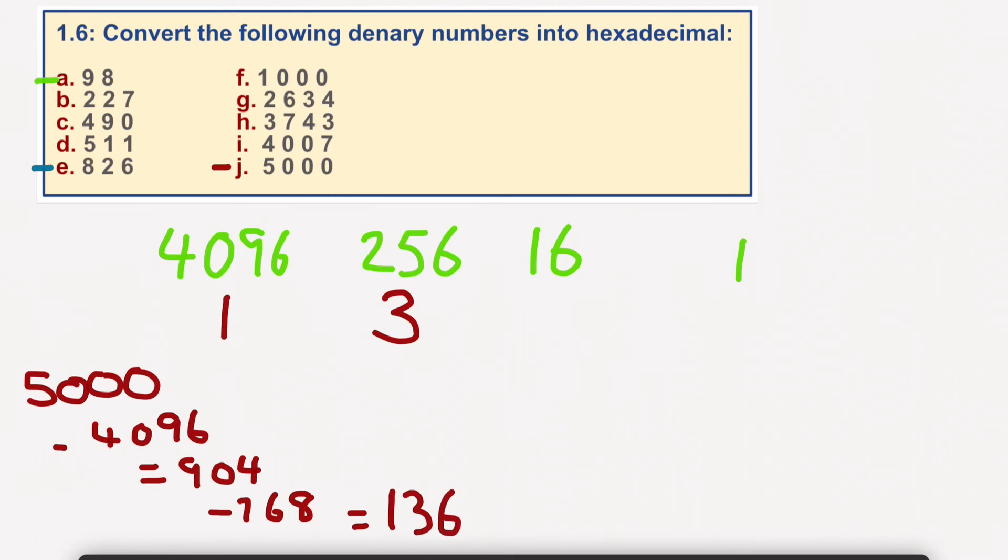136 divided by 16. And that goes in. So 136 divided by 16. 8 times 16 equals 128, I believe. So we've got 8 left over. So the answer should be 1388.